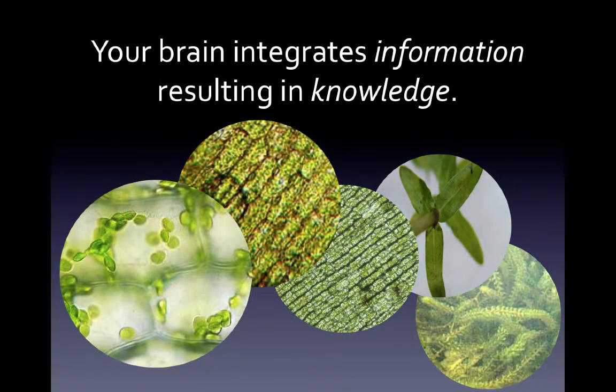Your brain integrates information, and it's that integration that really results in your knowledge. If you were to take pictures through the microscope, you would get each as just a snapshot. But your brain knows all of these images and understands how they connect and how they connect to wider processes, all at the same time. Your brain can do things we can't do with photography or by reading.